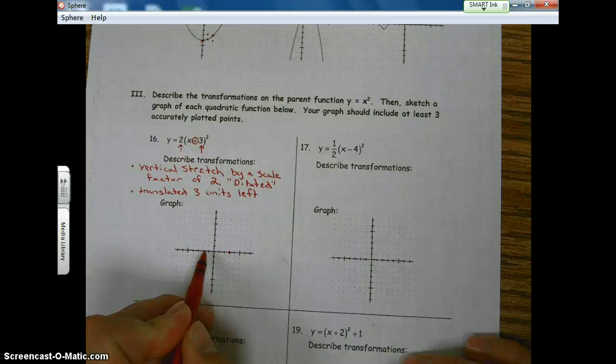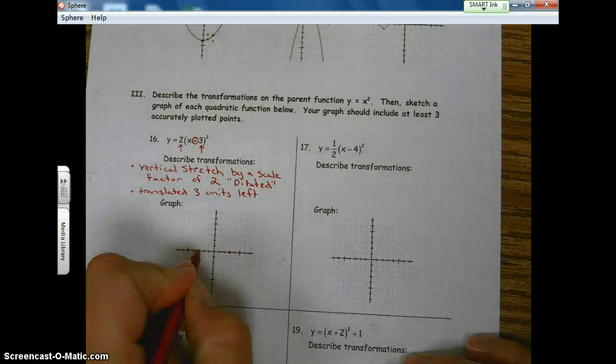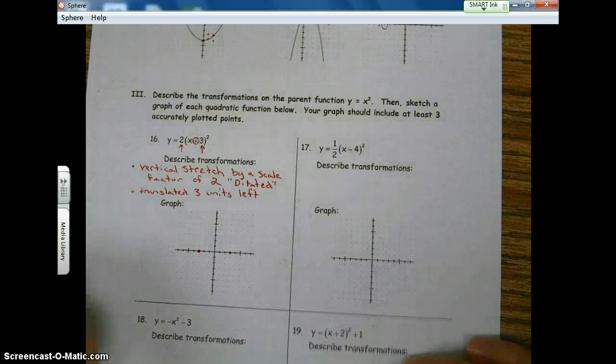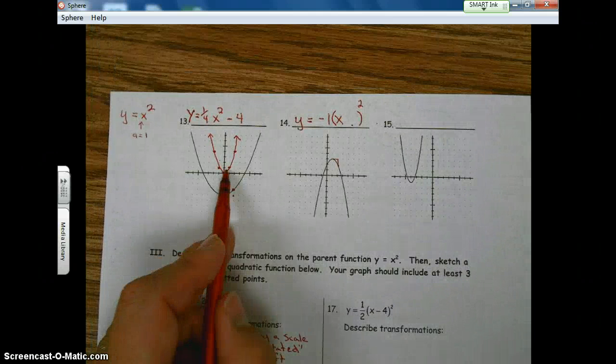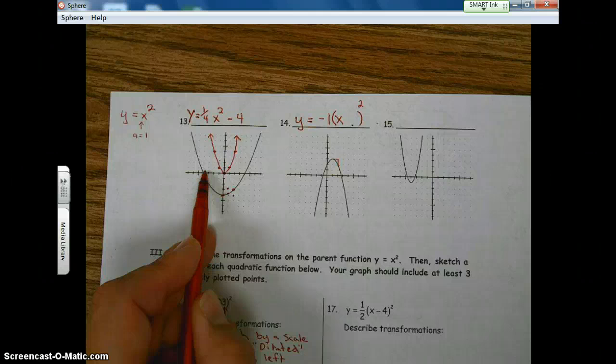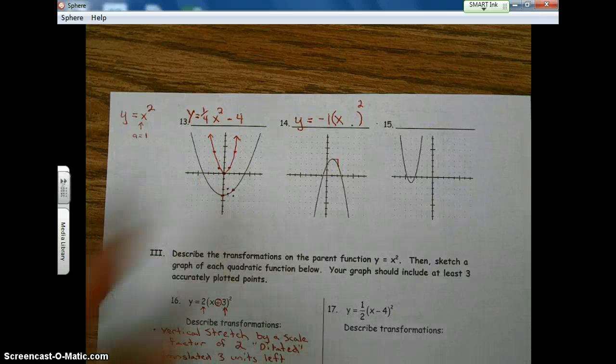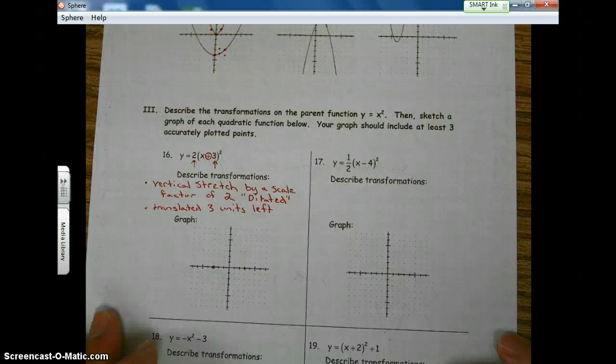Three units to the left. One, two, three. Let's get it right, shall we? Three units to the left. So again, if you visualize the parent function moving three units to the left, the whole parabola moves with it.